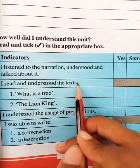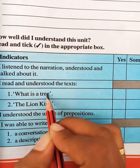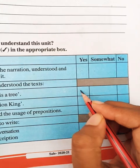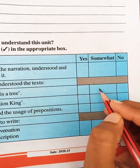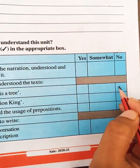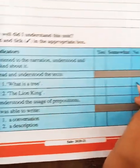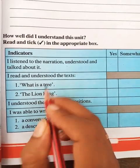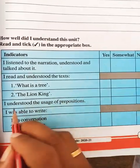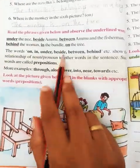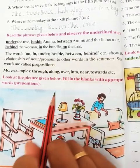'I read and understood the text' - the text in the lesson 'What is a Tree?' If you have read and understood it, tick 'Yes'. If you understand somewhat, tick in the middle. If you did not understand at all, tick the last column. Then for 'The Lion King' - we have finished two lessons. 'I understood the usage of prepositions.' I already gave you homework on prepositions. Did you understand about prepositions?